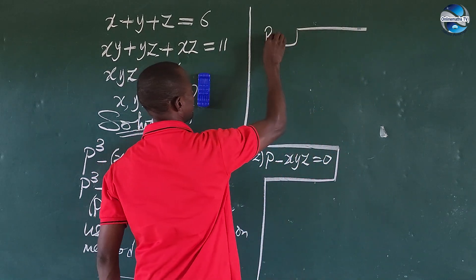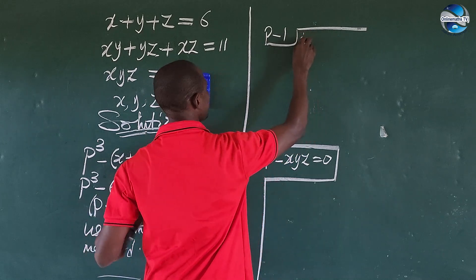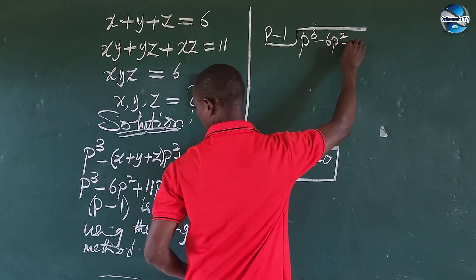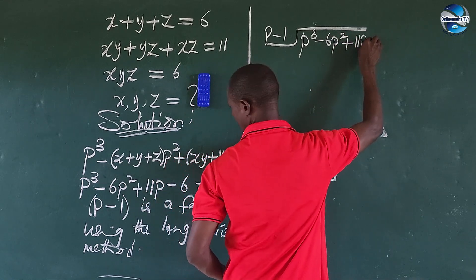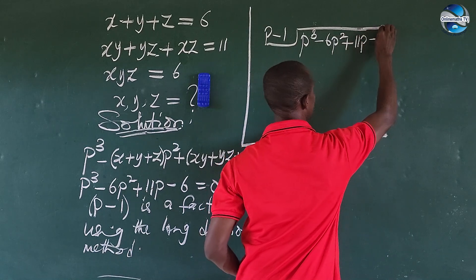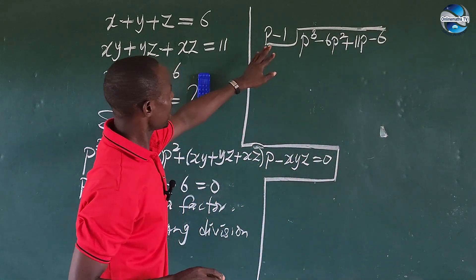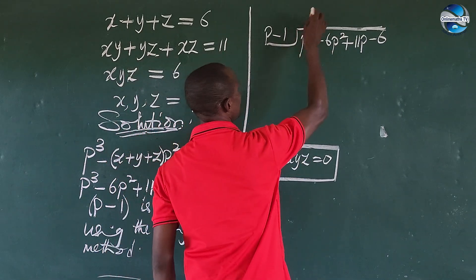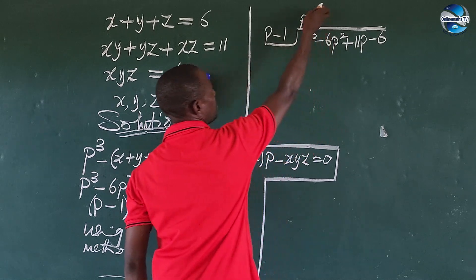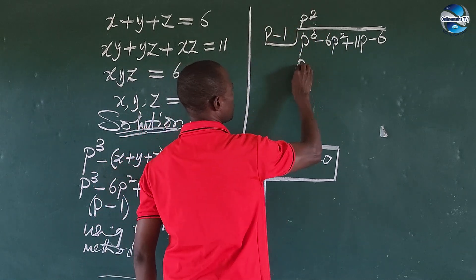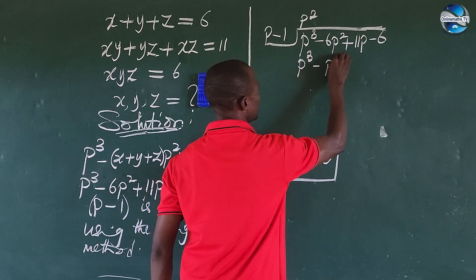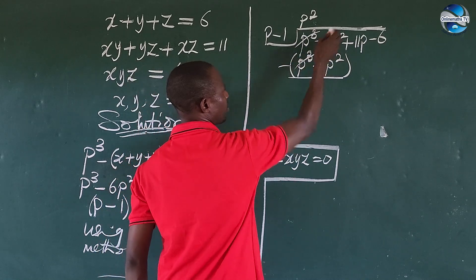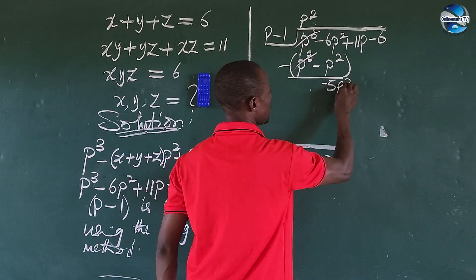Our divisor is P minus 1, and our dividend is P cubed minus 6P squared plus 11P minus 6. Dividing P into P cubed gives P squared. Multiplying P squared by P minus 1 gives P cubed minus P squared. Subtracting leaves minus 5P squared.